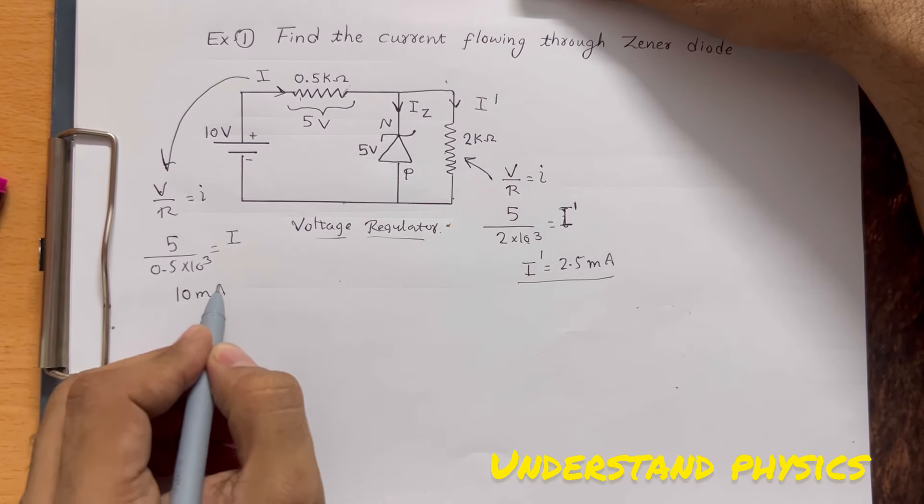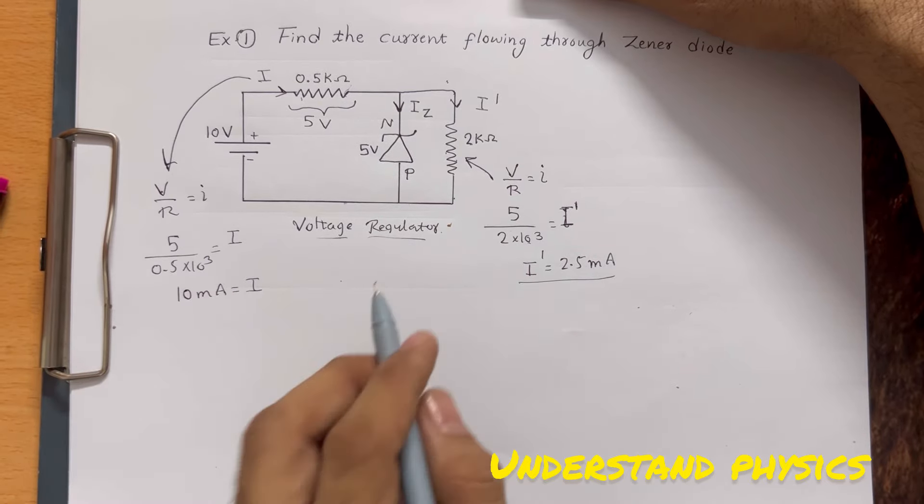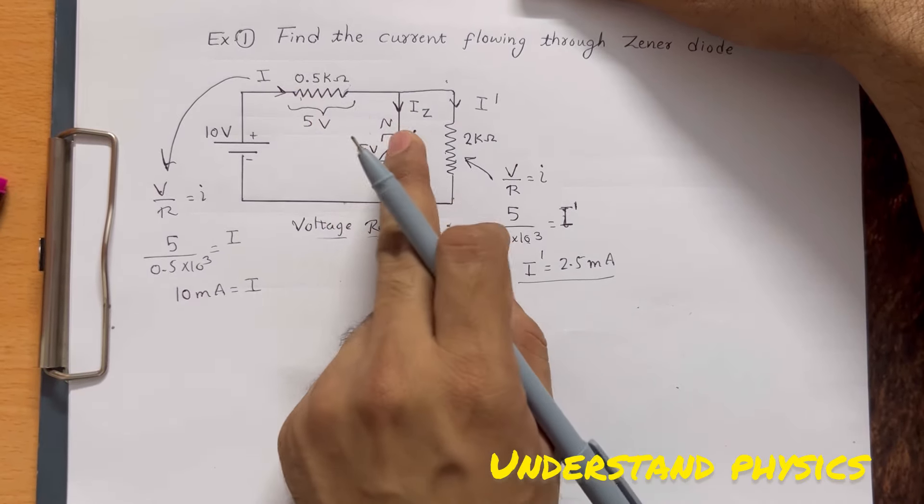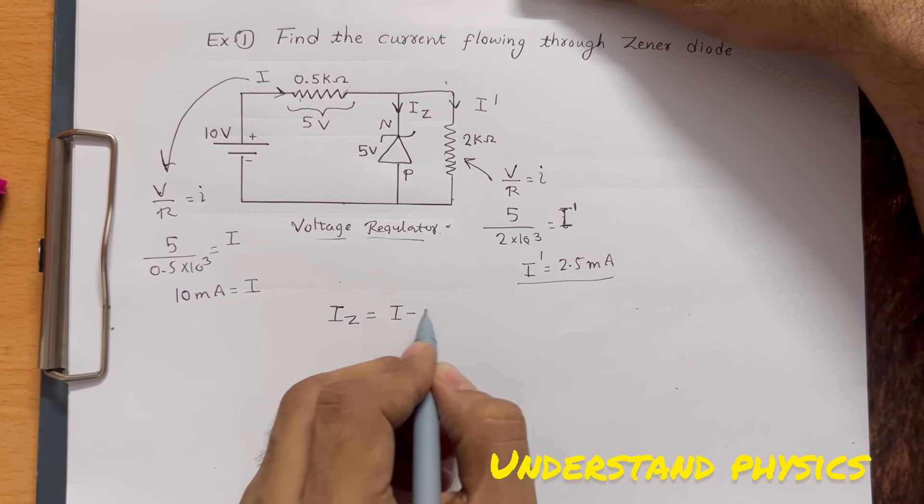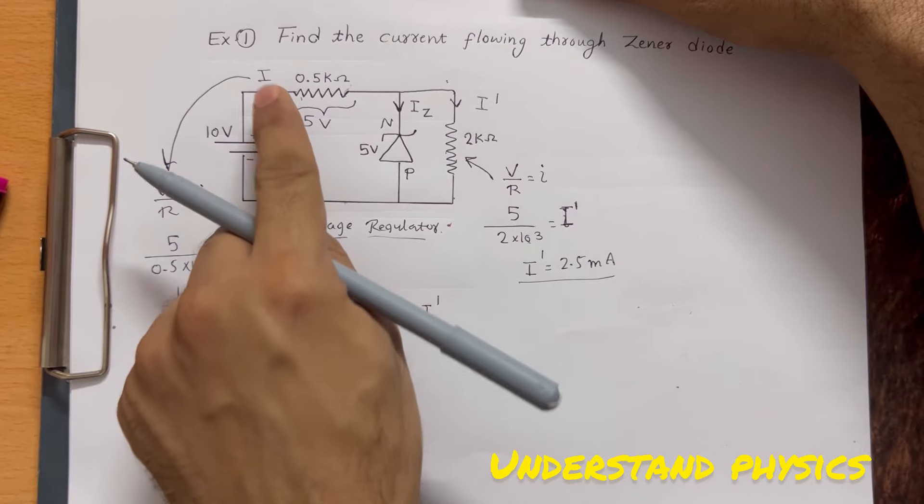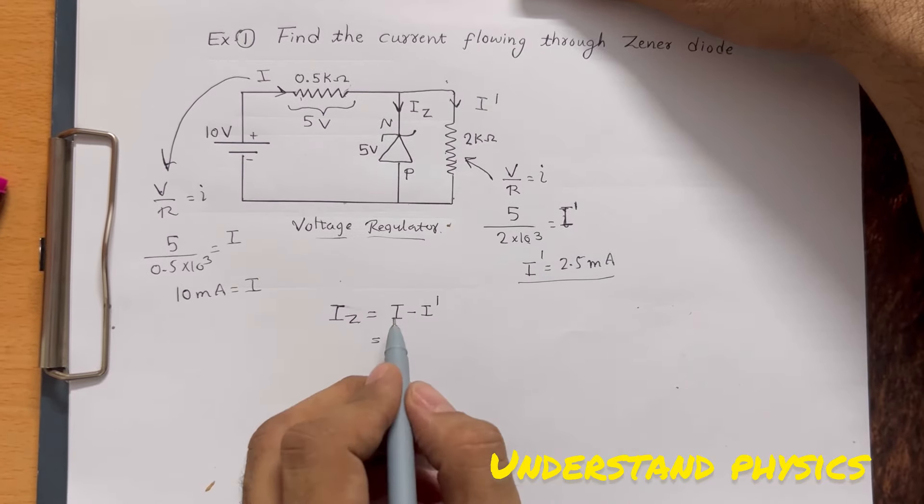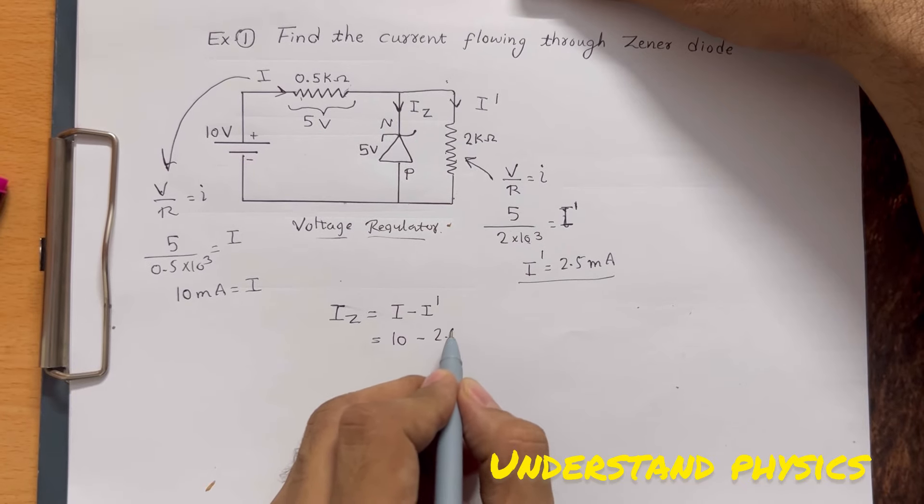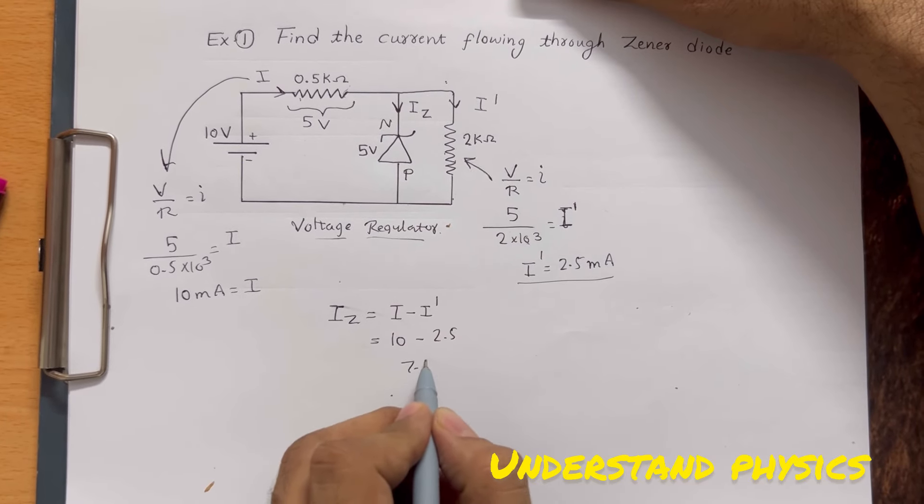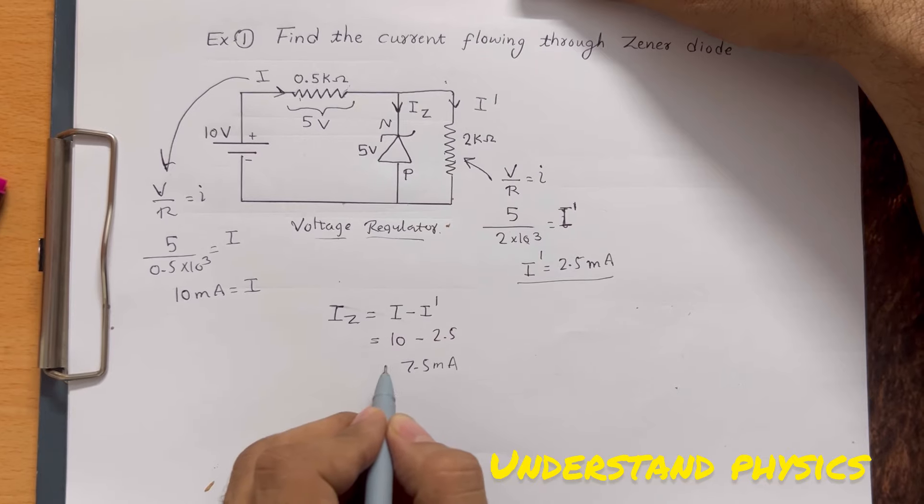So this current is 10 mA. Now we can easily find the current through the Zener. Current through the Zener will be I minus I'. I minus I' is 10 mA minus 2.5 mA, which equals 7.5 mA.